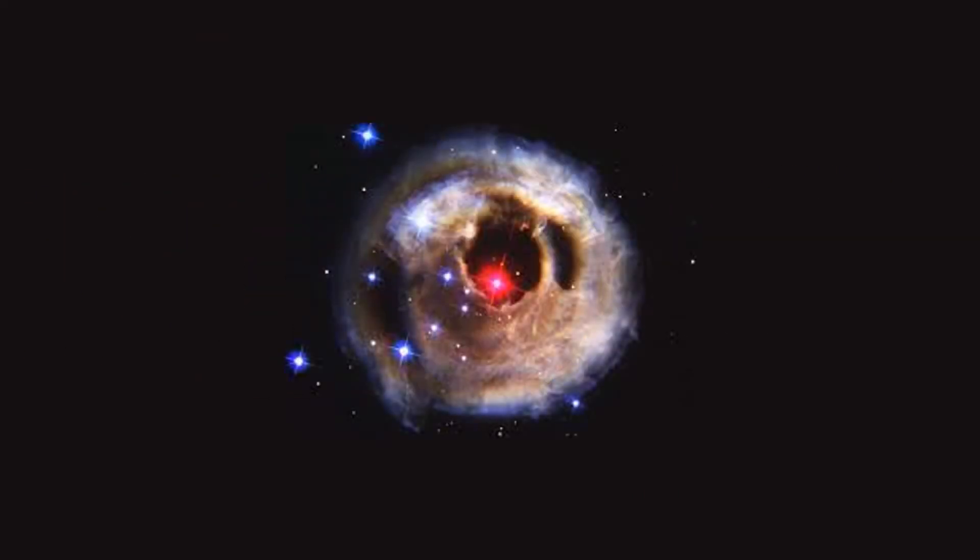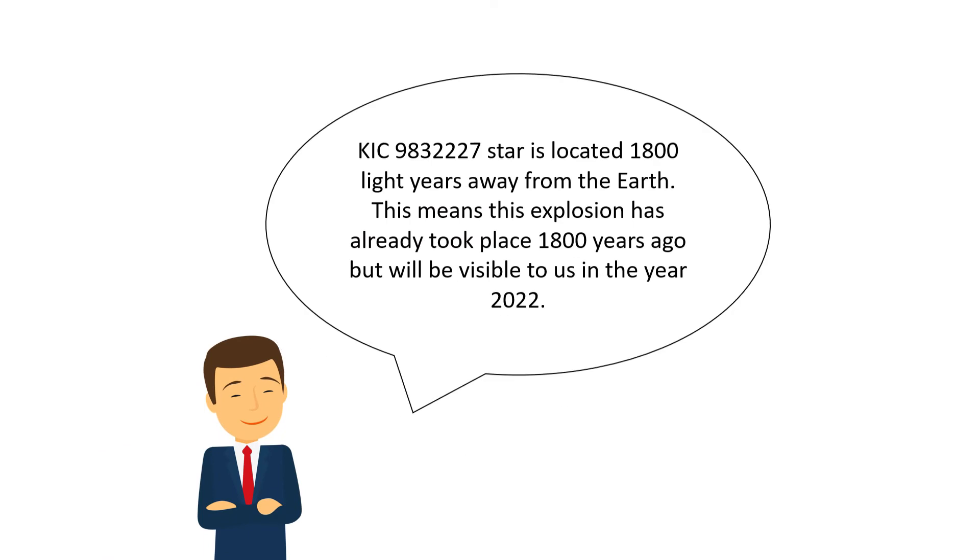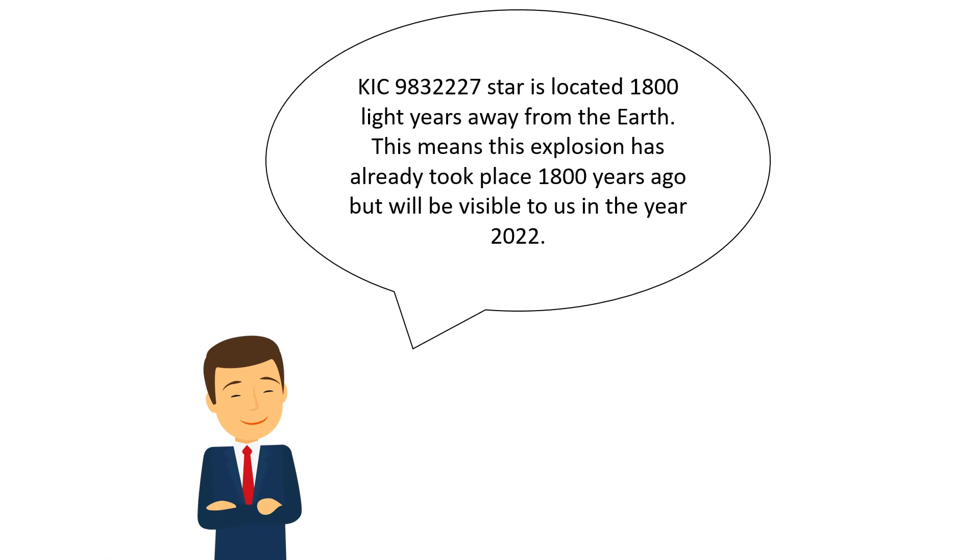KIC-9832227 star is located 1800 light years away from the Earth. This means this explosion has already took place 1800 years ago but will be visible to us in the year 2022.